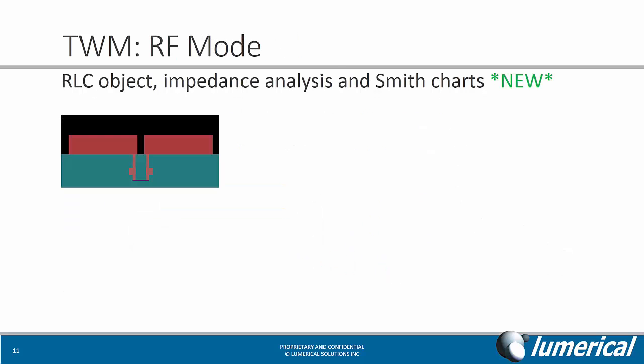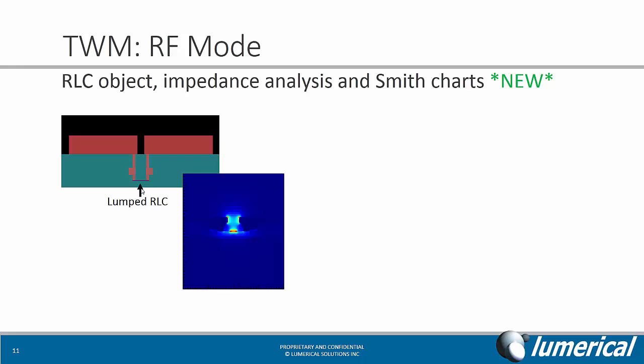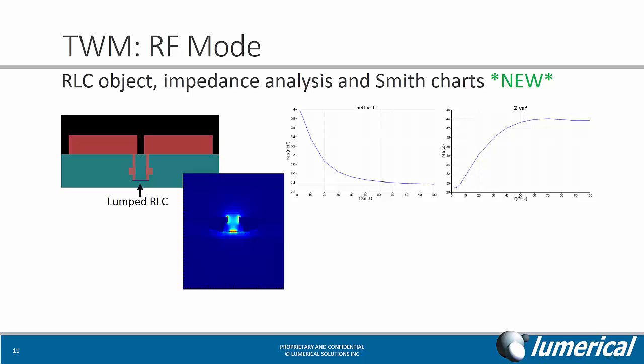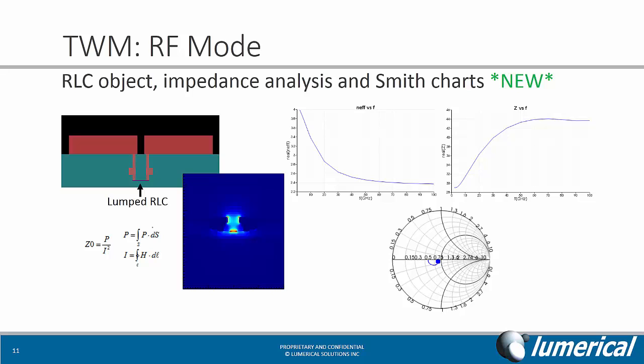The same type of modal analysis can also be applied to the RF transmission line. Here I have the transmission line structure, which is loaded using a lumped RLC object. This is the mode that I get at 10 GHz, and I can use the same eigenmode analysis tool in MODE Solutions to retrieve the microwave index as well as impedance. The new impedance analysis and Smith chart capabilities are very useful for these types of analysis, and these are the key parameters for a traveling wave modulator.